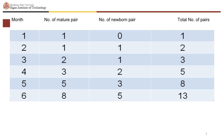Here is the table of his observations. On the first month, there is one pair of rabbits. On the second month, there is still one pair of rabbits. On the third month, there are two pairs of rabbits.